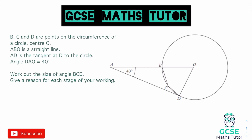On to question two. B, C and D are points on the circumference of a circle. ABO is a straight line connecting from BA to the centre. AD is a tangent — this line forming the base of that triangle. Angle DAO is 40 degrees, labelled on the diagram. We need to work out the size of angle BCD, which is this angle on the shape.